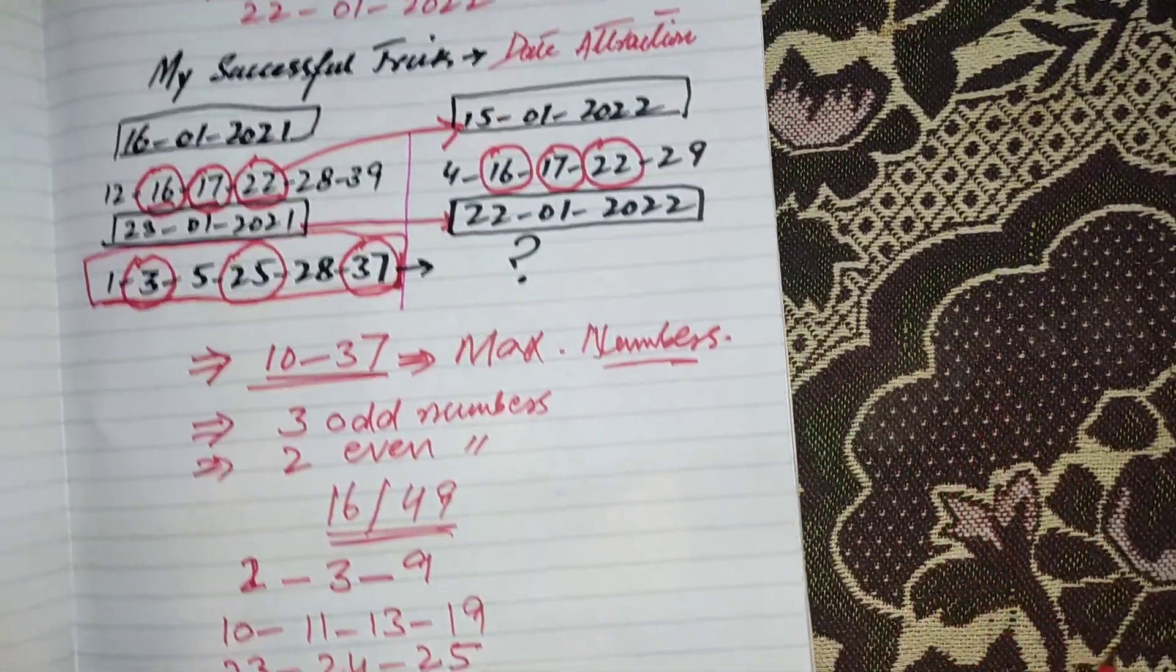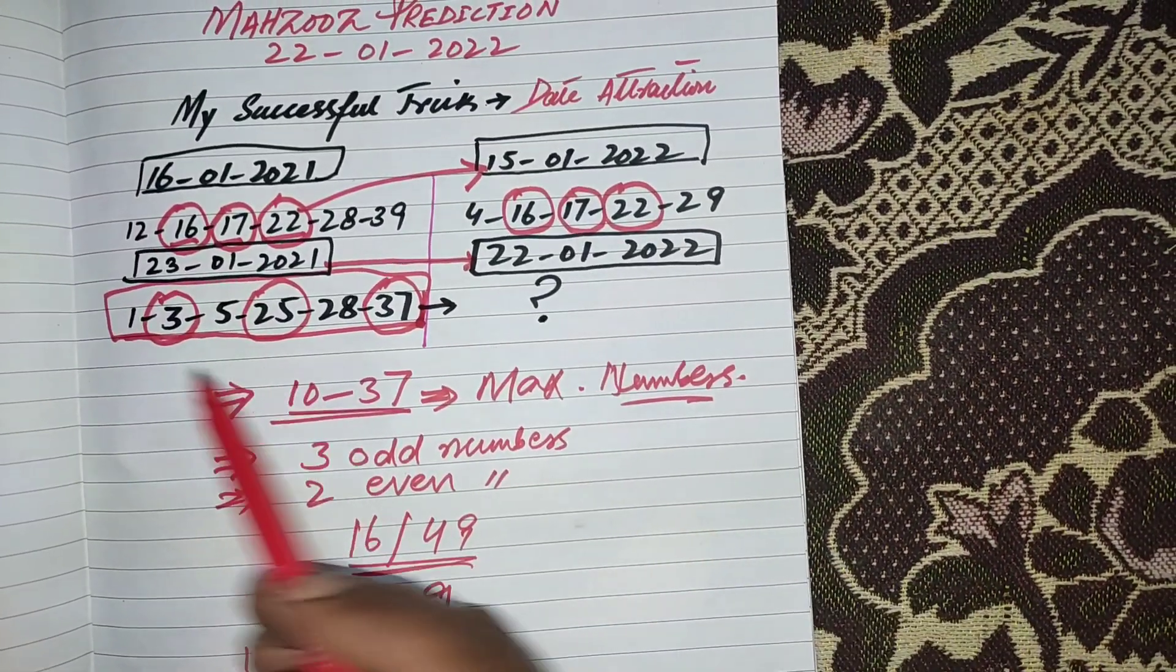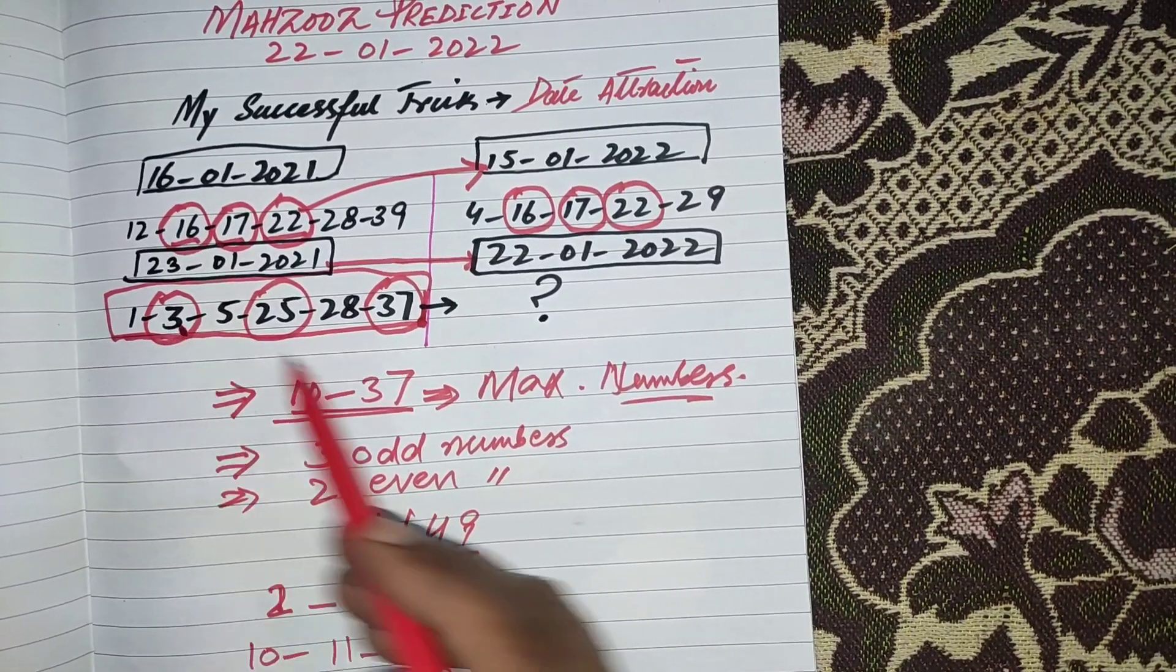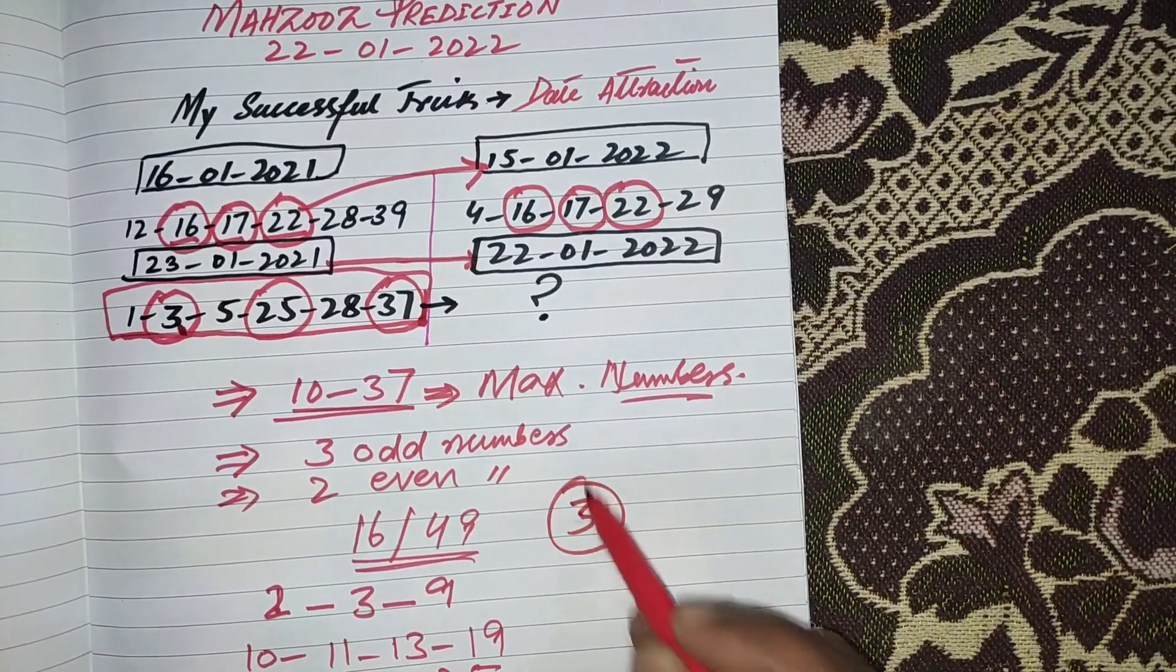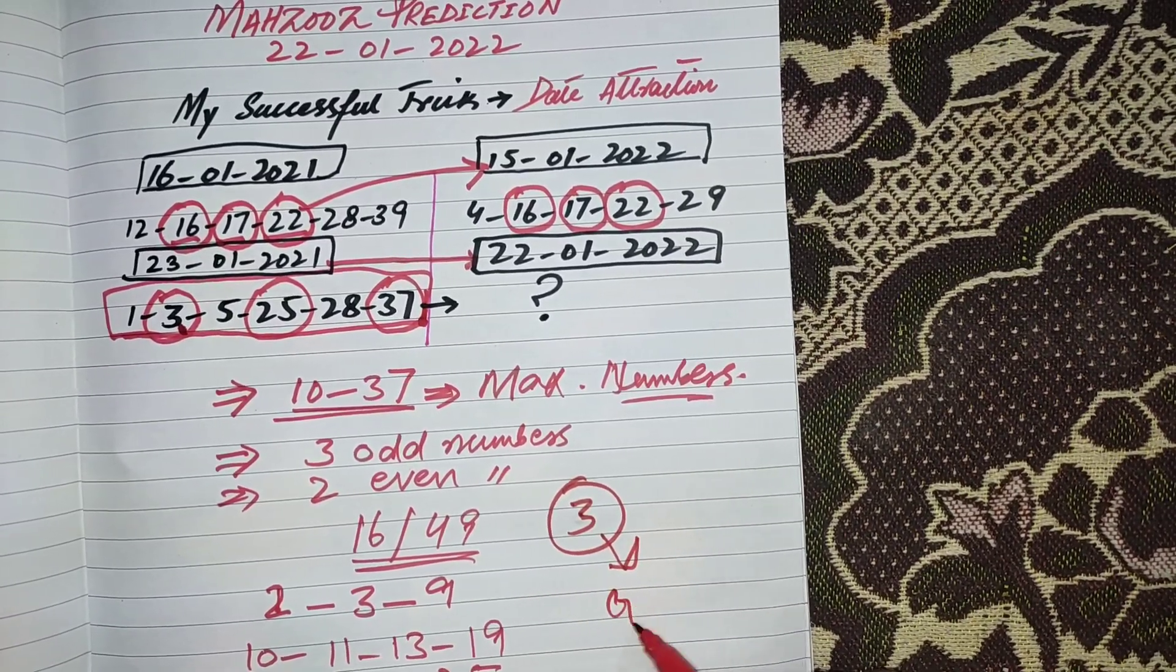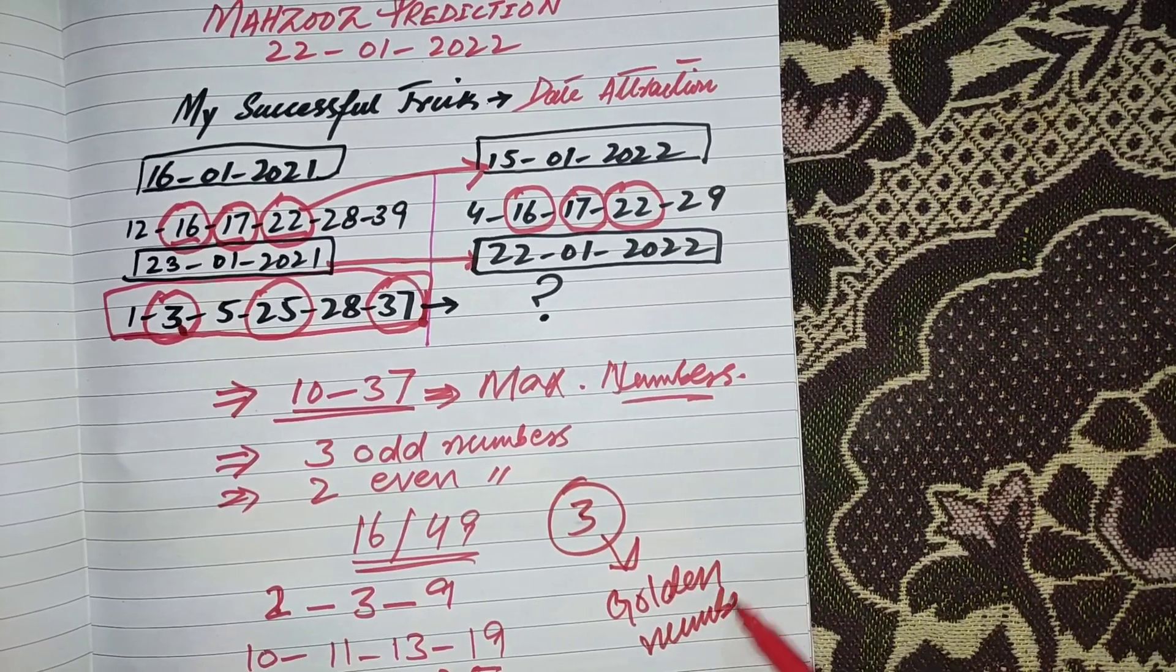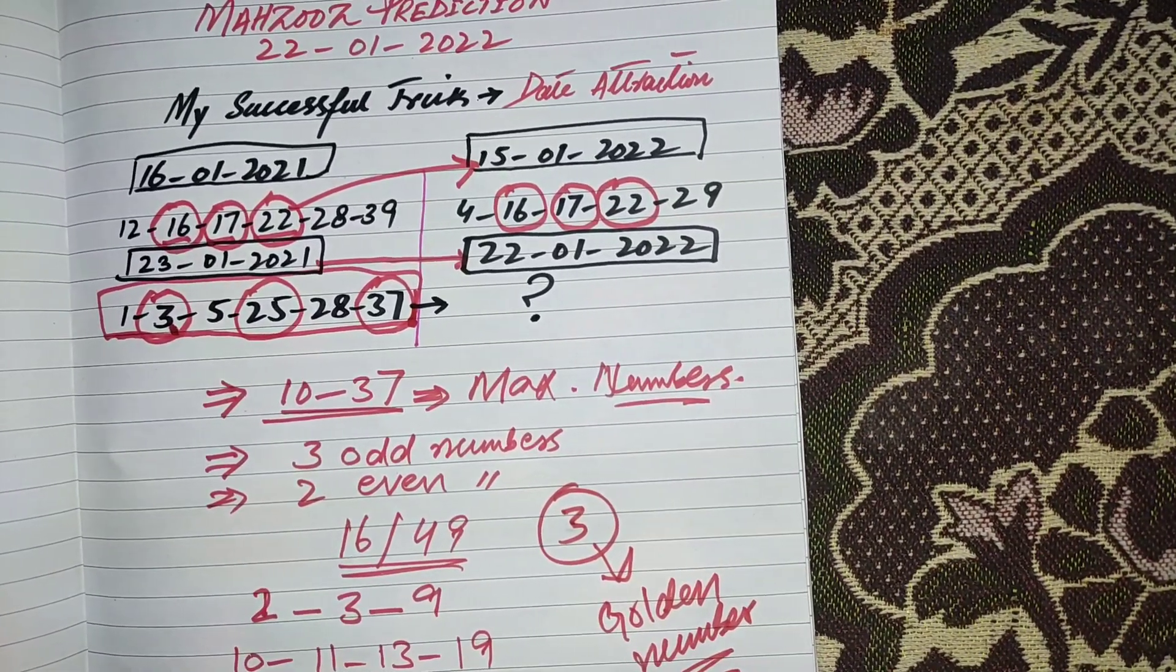This is my final prediction, friends. In my previous video I showed you the routine about number 3. You can see here also match 3 numbers. So for the coming draw, 3 is the golden number. So in the end, good luck to all and goodbye.